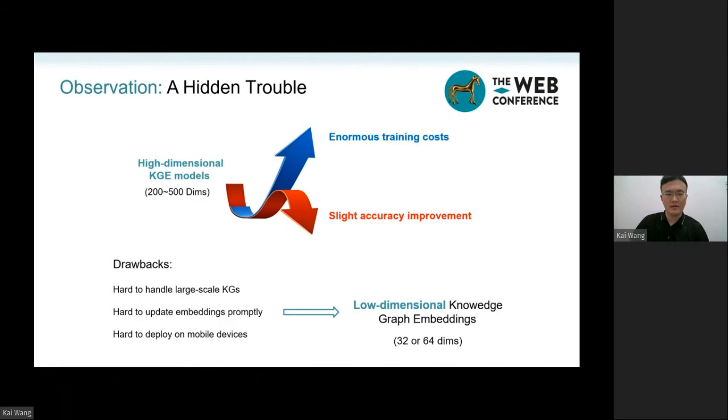To achieve higher prediction accuracy, recent KGE models use high dimensional embedding vectors, up to 200 or even 500 dimensions. However, the high dimensional embedding vectors meet enormous training costs and storage space.